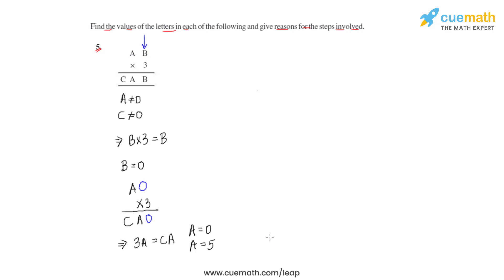A will definitely be equal to 5. Now let us replace this value of A in the product. We'll have 5 and then the value of B which is zero.